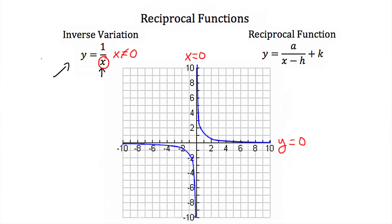Also notice that y can never equal 0. This is because there is no value that I can plug in for x that will make y equal to 0. There's no number that I can divide 1 by to make it equal to 0. If x is very large, then this fraction will be very small and our y will be very small. If x is very small, that will give us a very large y value. So because y and x can never equal 0 in this function, that's where we get our asymptotes for this graph.